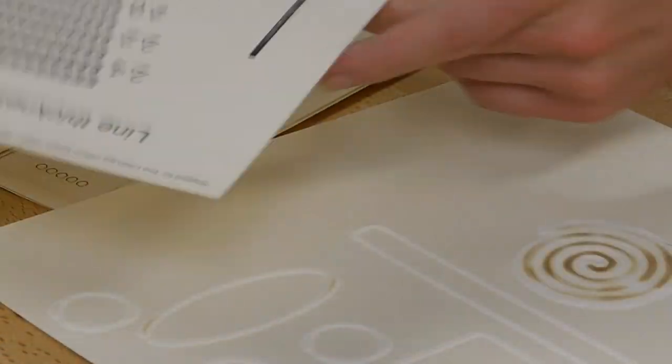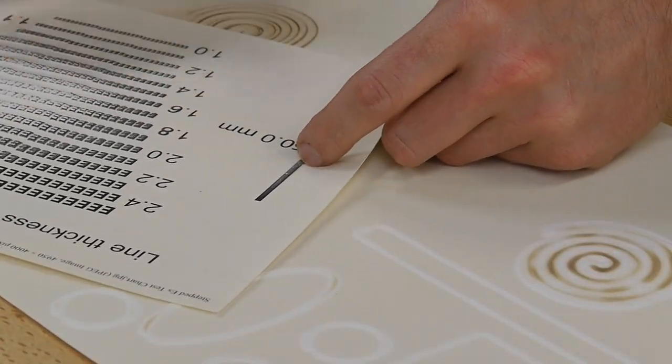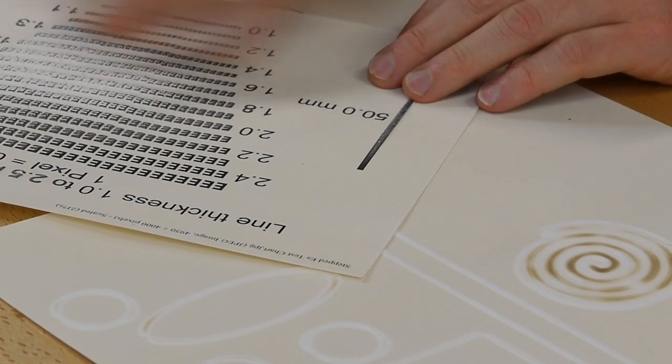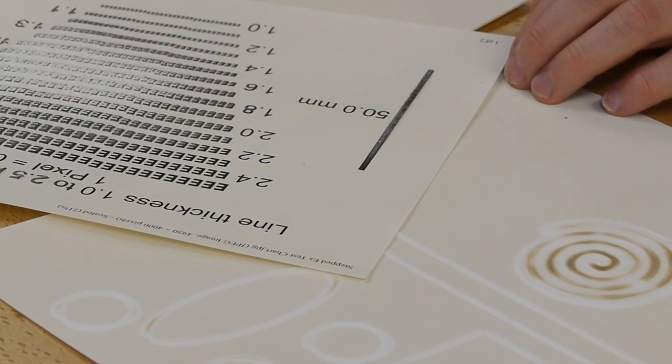And the application of this is so that blind folks can actually get a sense of a diagram or a picture. So you can print this out on a normal printer and then you can kind of raise it up so that it has this 3D feature to it.